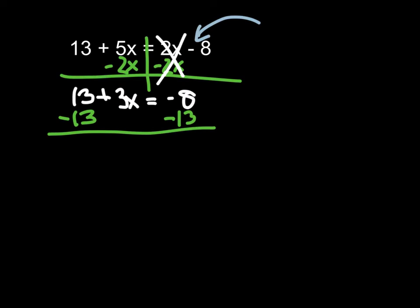Positive 13 and negative 13 make 0, so we now have positive 3x equals negative 21. The last thing we need to do to get x alone is divide by 3 because 3 over 3 is 1, so we'll have 1x. We have to do the same thing to the other side. So we get x equals negative 7.